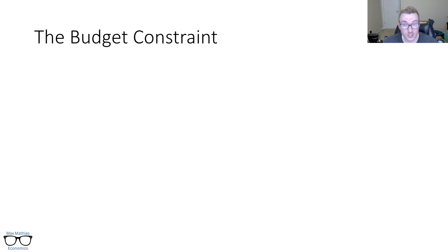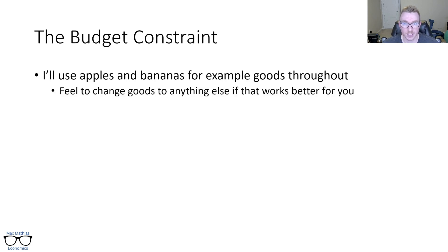So the budget constraint. I'm going to use apples and bananas for example goods throughout. This is just to keep things concrete. Feel free to switch them to any other goods if you want. When I do this in class, I do it with good one and good two, just to kind of make it actually as generic as possible. So I'm trying to make things a little bit more concrete here, but if you want to do aardvarks and bicycles or whatever, or anything else, it doesn't matter. The same logic applies.